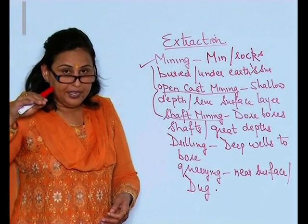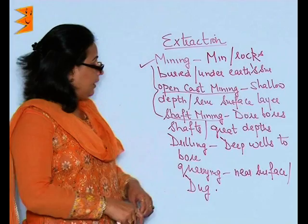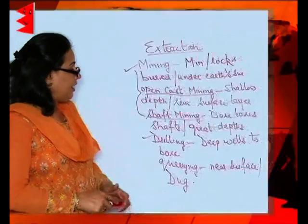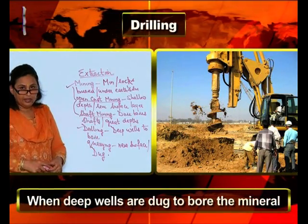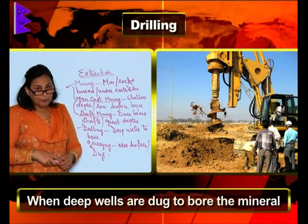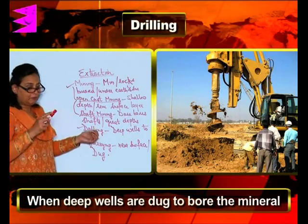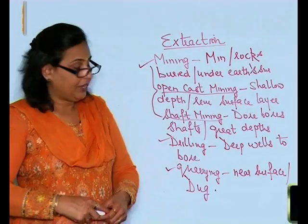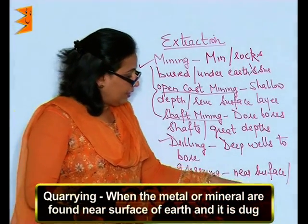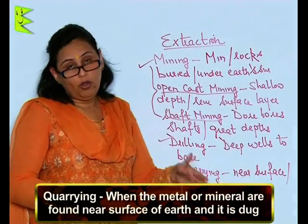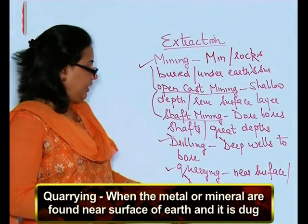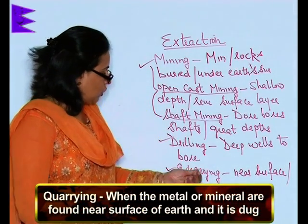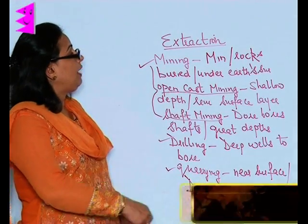The second process of extracting minerals is drilling. This is done when deep wells are bored to extract the minerals. The third and last process is quarrying. Quarrying is when the mineral or metal is found near the surface of the earth and is dug out — when this digging is done near the surface, it is called quarrying.